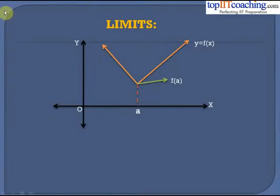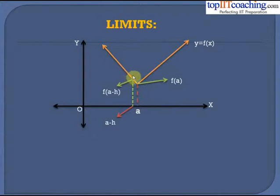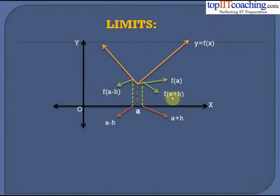Let's say that y = f(x) is this function. For x equal to a, the value of y = f(x) is f(a). Now if I take any point on the left side of a — that is a minus h, where h is any positive number — then the value of f is f(a − h). Similarly, if I take a point to the right side of a, that is a plus h, then the value of y would be f(a + h).